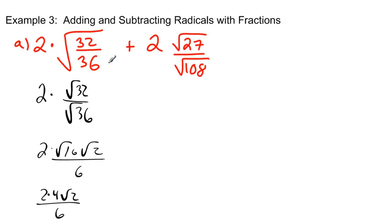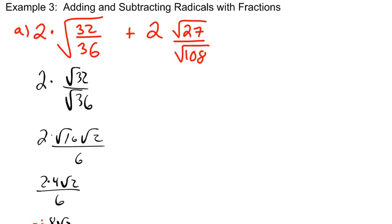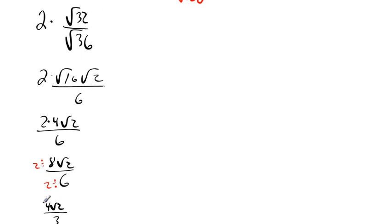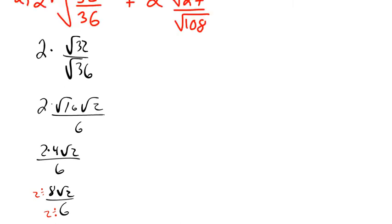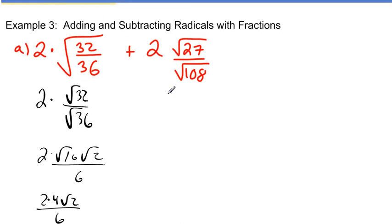That simplifies to 4 radical 2 all over 3. So all that work was to simplify the left side. The left side is 4 radical 2 over 3. Now let's come over and simplify the right side. We have 2 times radical 27 — we want a perfect square number that goes into 27, and that would be radical 9 times radical 3, since 9 times 3 is 27.